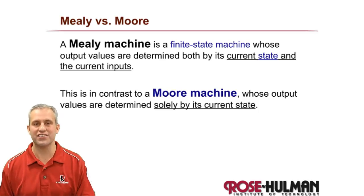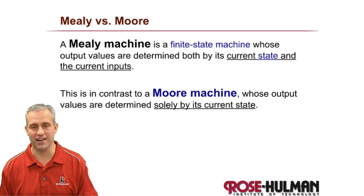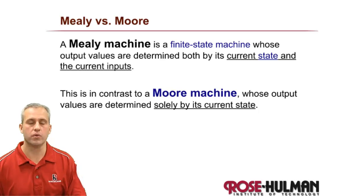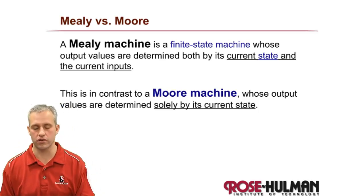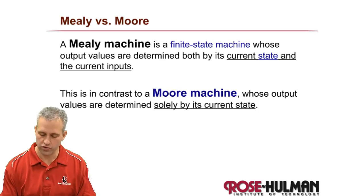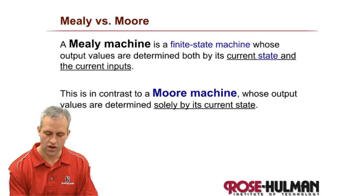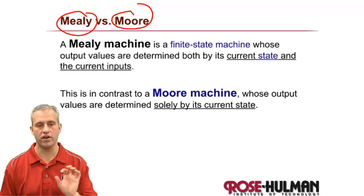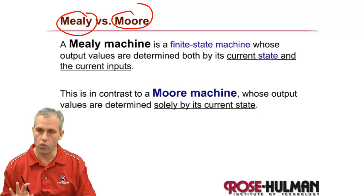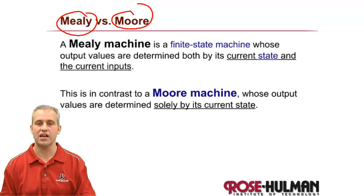Alright, welcome back. The last one was kind of grueling, so we'll try to keep this one pretty light. Really what we want to do is show you some vocab words between finite state machines. A quick little example: the vocab words you'll hear around finite state machines are Mealy and Moore. So a Mealy machine is one type of finite state machine and a Moore is a different type.